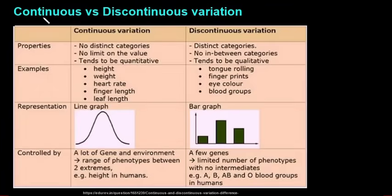There are also two types of variation: continuous and discontinuous. With continuous variation, there are no distinct categories and no limit on the value - height, weight, heart rate, finger length, and in plants, leaf length. In your class there'll be a wide variety of different heights ranging from 1.5 to the tallest guy at 1.8 meters. This is generally shown on a line graph because there are no distinct categories.